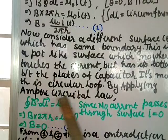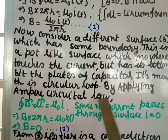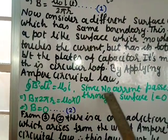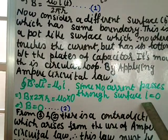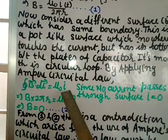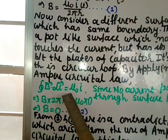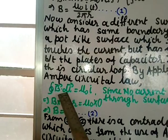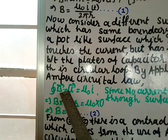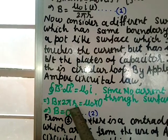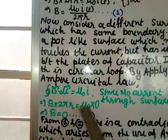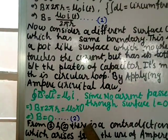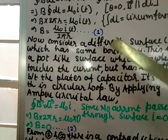Applying Ampere's circular law: ∮B·dl = μ₀i. Since no current passes through this surface, i = 0. So μ₀ × 0 = 0, and since B is constant and ∮dl = 2πr, we get B × 2πr = 0, therefore B = 0. Call this equation 2.